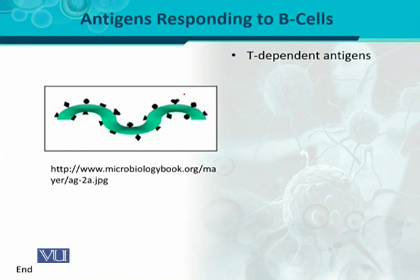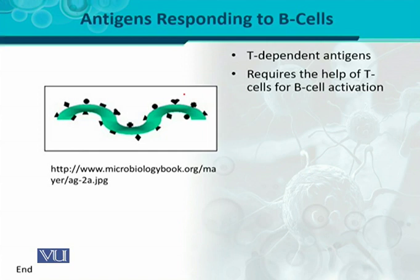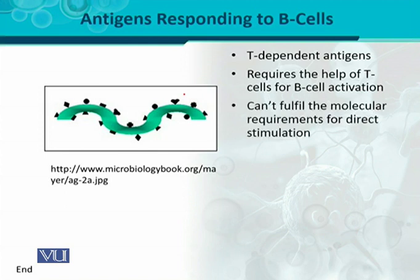Another important variety of antigen that B cells respond to is T-dependent antigen. T-dependent means they need the help of T cells. Without T cells, B cells will not be activated, B cells will not proliferate, B cells will not differentiate into plasma cells, and ultimately there would be no antibodies. Structurally, these molecules cannot fulfill the molecular requirement for direct stimulation. Unlike T-independent antigens where B cells are directly activated, T-dependent antigens do not fulfill the molecular requirement for direct B cell activation — that's why they are called T-dependent antigens.